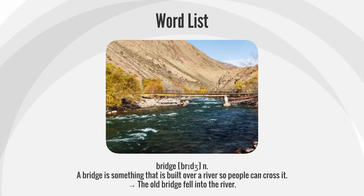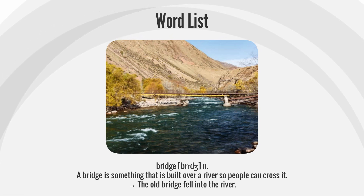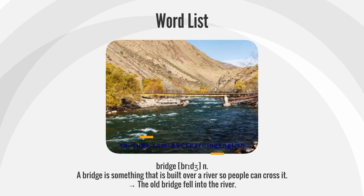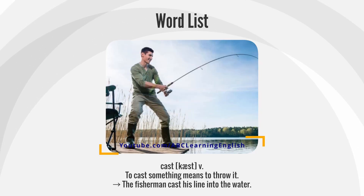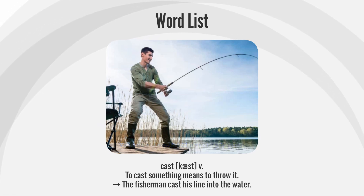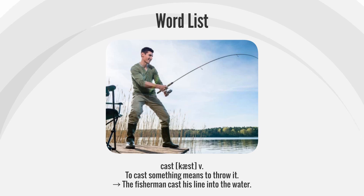Bridge — a bridge is something that is built over a river so people can cross it. Example: The old bridge fell into the river. Cast — to cast something means to throw it. Example: The fisherman cast his line into the water.